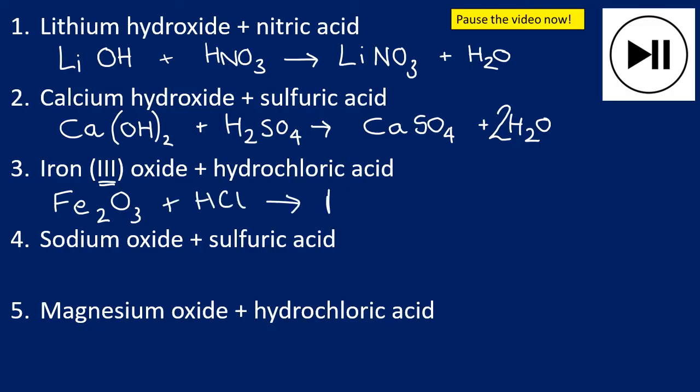It's going to produce iron chloride. Now iron is 3+, chloride is 1-, so it's going to be FeCl3. It's also going to release water, H2O. Very difficult to balance this one, but there we go.